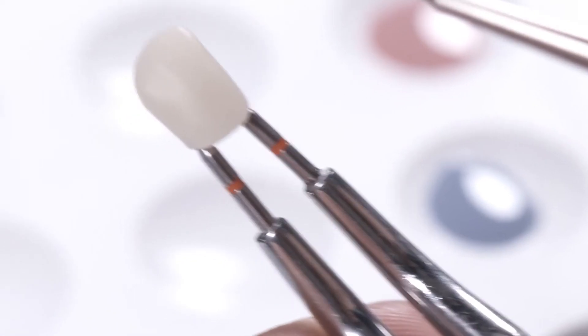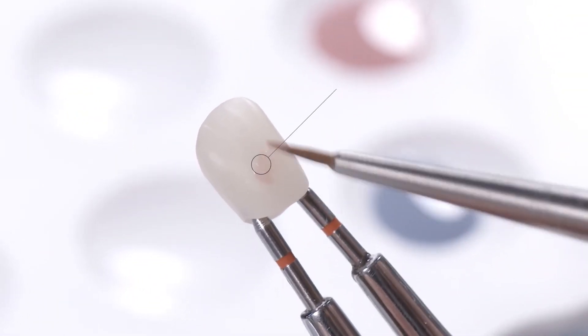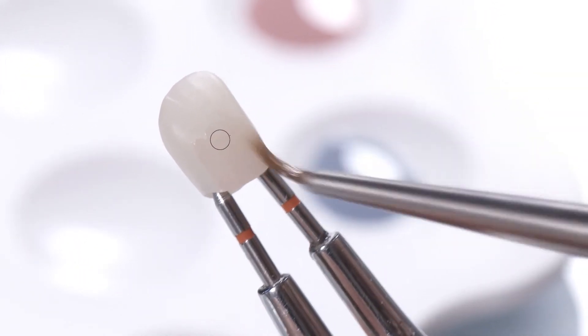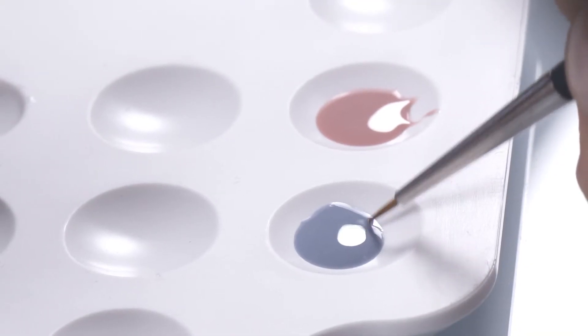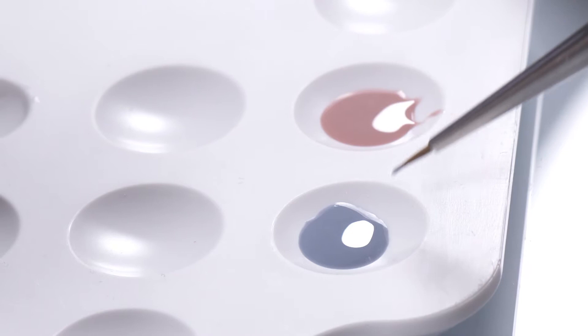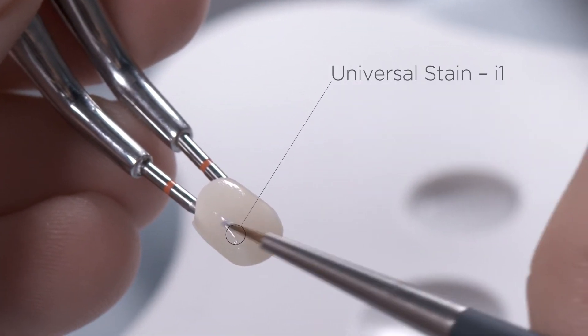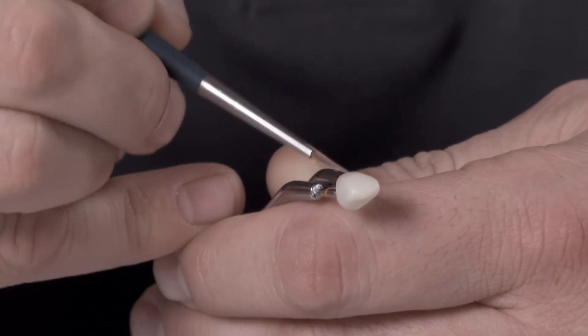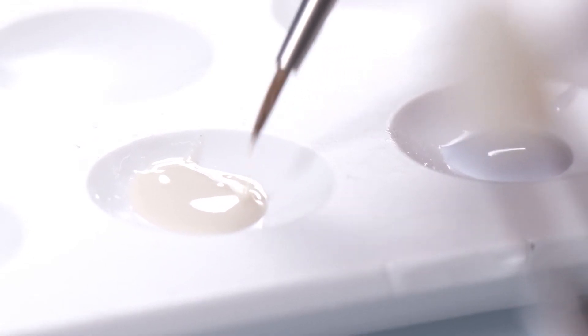Simply customize the crown body with a bit of pink. Emphasize the enamel ridges with incisal stain I1, and support the incisal area with its mamlon structures with some cream.